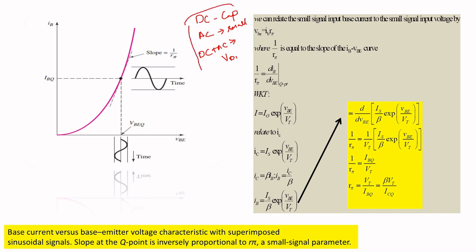This is very important to understand for the further lecture. What you are going to learn is how a small signal superimposed on the DC voltage and current at the Q-point responds. We are going to draw the small signal analysis of the transistor with respect to small signal parameters, without considering DC values — with and without the emitter resistor.